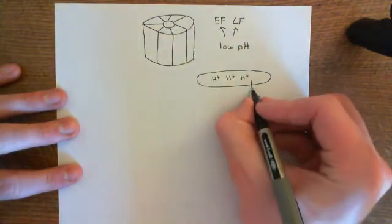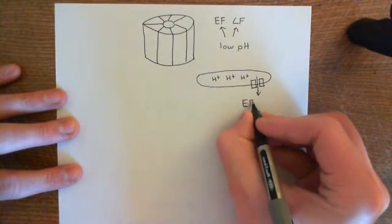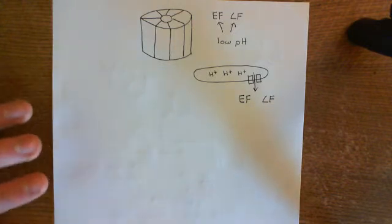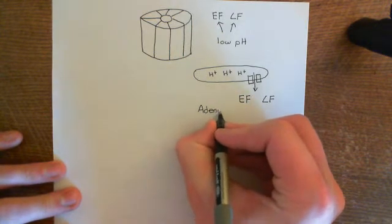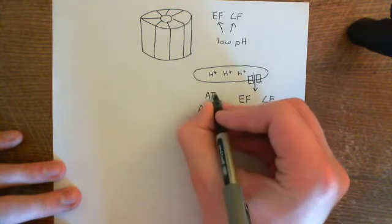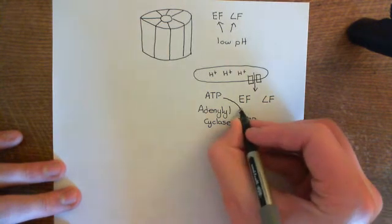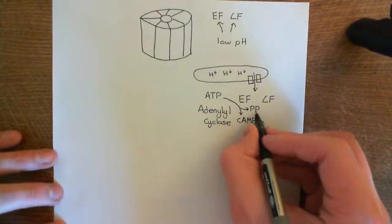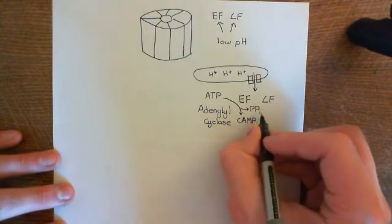When the edema factors and lethal factors change conformation, they move through the pore — going from the lumen of the early endosome into the cytoplasm. So what you now have released into the cytoplasm are edema factors and lethal factors. Edema factor (EF) is basically an adenylyl cyclase enzyme, which means that it converts ATP into cyclic AMP. It takes ATP within the cell and starts converting it into cyclic AMP and also pyrophosphate (PP), activating all of your cyclic AMP signalling mechanisms.